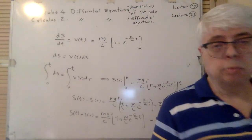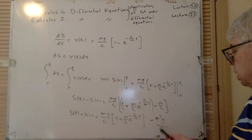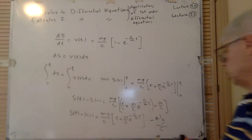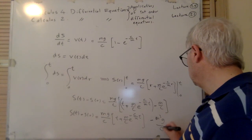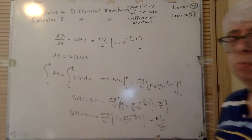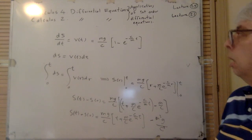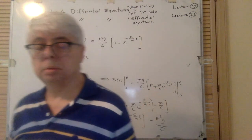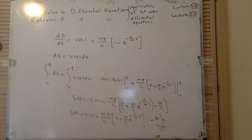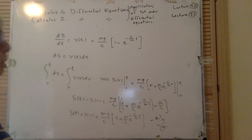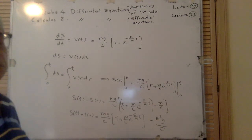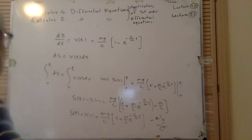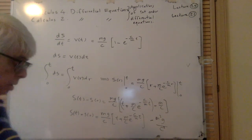The distance traveled depends on m and c, with g assumed fixed. These are some applications of first-order differential equations. In assigned problems, the model is usually given, but in real life you must derive the model yourself — that is, in fact, why mathematicians are employed in various fields. That concludes this lecture.